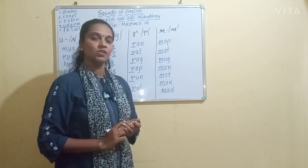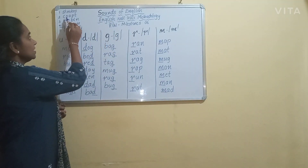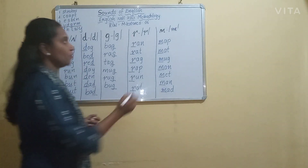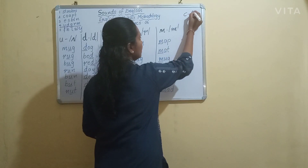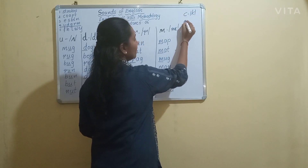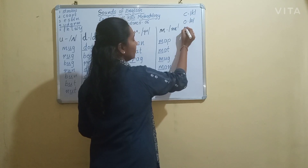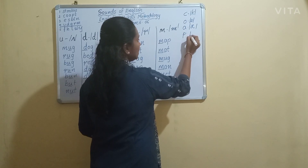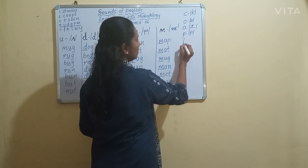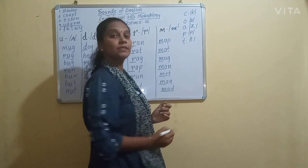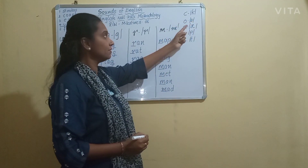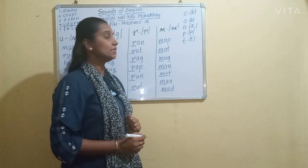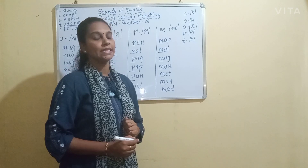So we will just revise all three clusters of sounds — C-O-A-P-T, E-S-B-I-N, and U-D-G-R-M once again. C says K, O says A, A says A, P says P, and T says T.